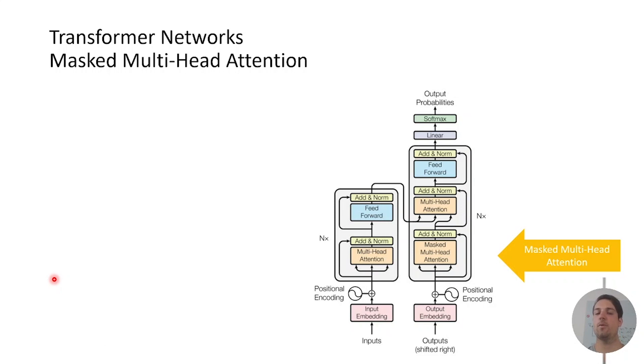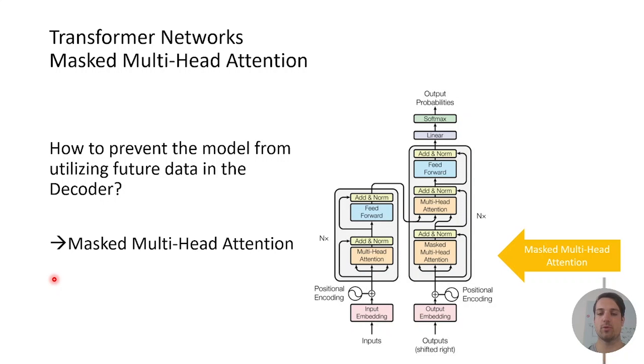You may ask why the target sequence is put into the decoder because that could sound like it makes no sense. It is actually done for training purposes to make the algorithm converge faster. But we need to know how to prevent the model from utilizing this future data to make predictions because if you give the decoder the full information about the target sequence there's no magic in doing good predictions. So we need to solve this problem and this is called the masked multi-head attention.